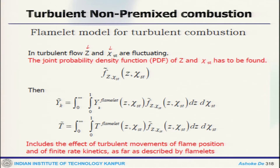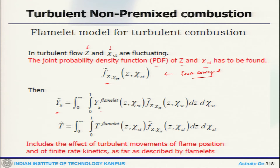You need to define the PDF or probability density function of Z and stoichiometry. Once you define that, the joint probability density function has to be found — this is again the Favre-averaged terminology. Then you can find out your mean species mass fraction using integration from 0 to 1 and 0 to infinity. This is the mass fraction variable, which is a local flame structure, times the probability density function.